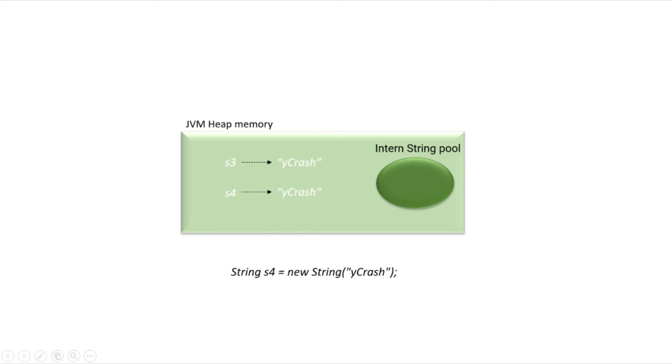The next statement — s4 equals new String of 'ycrash' — means one more new 'ycrash' string is created and assigned to s4. So now I end up having two string objects. This is what happens when we write code typically. But when you use intern, they are stored into the pool, and any duplicates are not allowed.